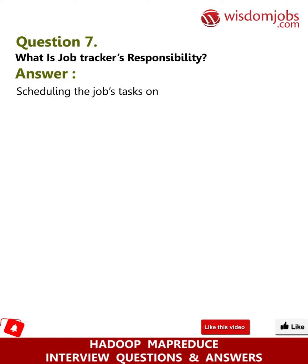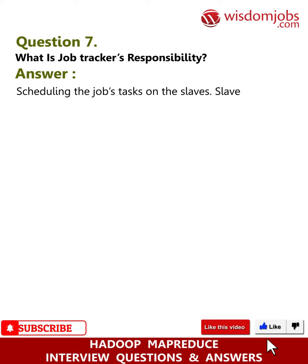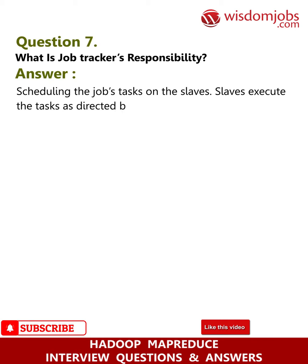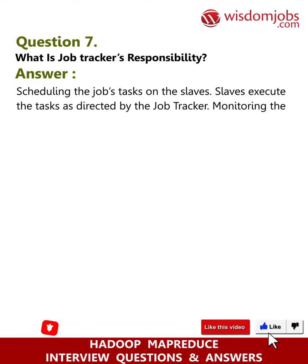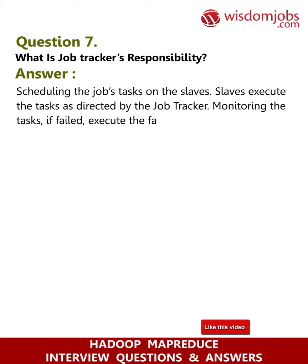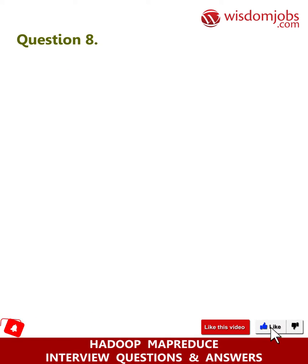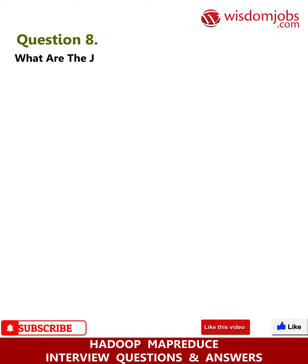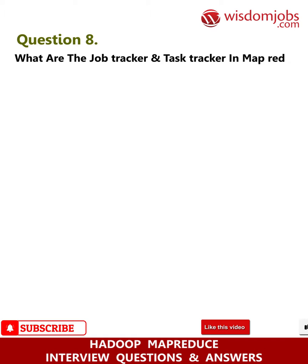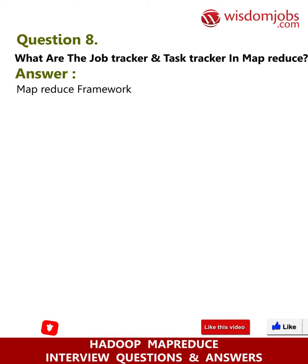Question 7: What is the job tracker's responsibility? Answer: The job tracker is responsible for scheduling the jobs and tasks on the slaves. The slaves execute the tasks as directed by the job tracker. It also monitors the tasks and, if any task fails, re-executes the failed tasks.